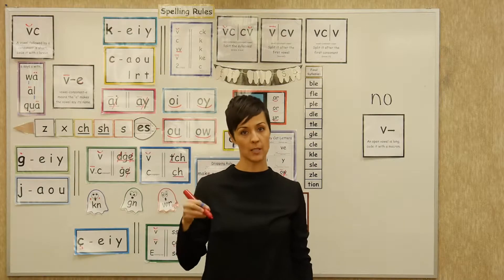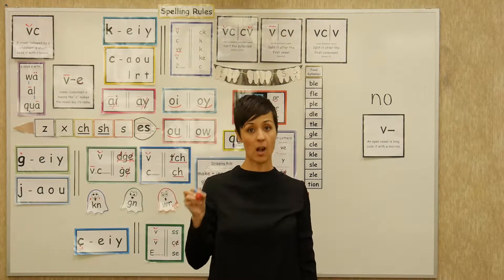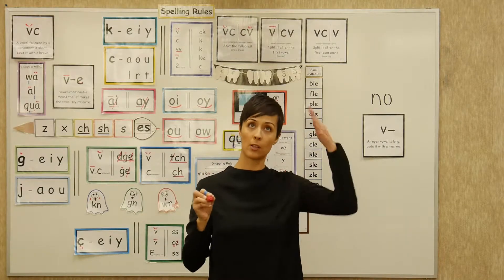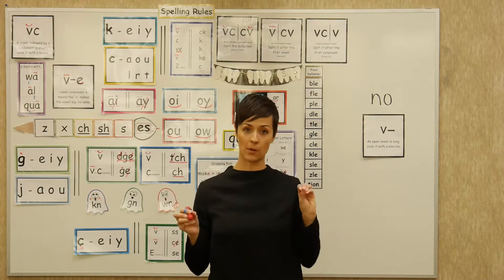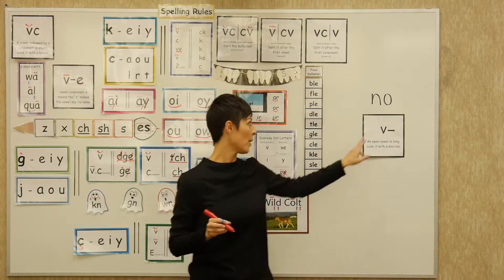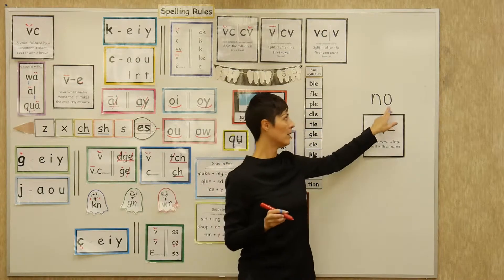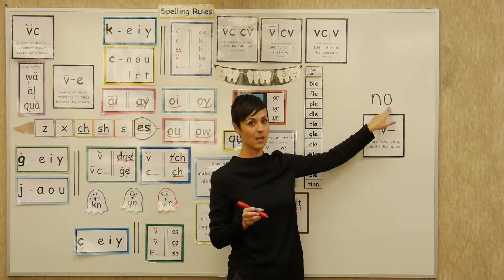In Lesson 2, we already taught the kids about a vowel followed by a consonant in short — code it with a breve. Today, we're going to teach them what happens if you have a vowel that's not followed by a consonant.